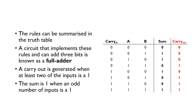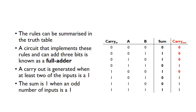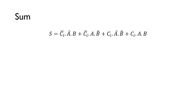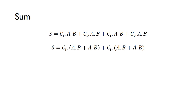The circuit that implements this three-bit addition is called a full adder. Unlike the half adder, we can't simply read off the hardware directly — we need to use Boolean algebra to simplify. Starting with the sum, we identify the four minterms and look for common factors to simplify the expression.